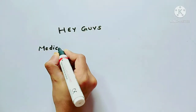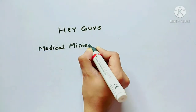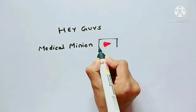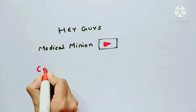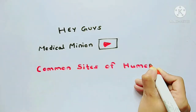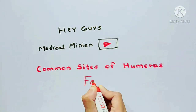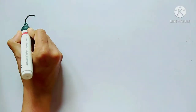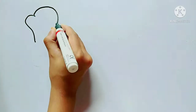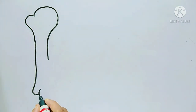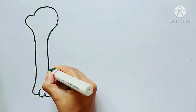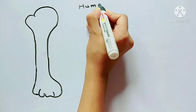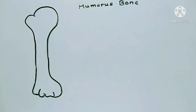Welcome back to my channel Medical Minion. In this video we are going to talk about the common sites of fractures in the humerus bone. This is a video for anatomy. Here I'm drawing the humerus bone — this is the anterior side of the right humerus bone.